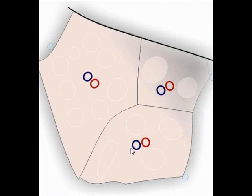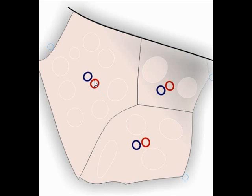The layers of connective tissue that separate secondary pulmonary lobules are known as septa. Each secondary pulmonary lobule has a bronchovascular bundle, which is composed of a terminal bronchiole and a branch of the pulmonary artery known as the lobular artery.